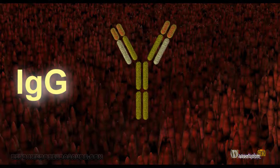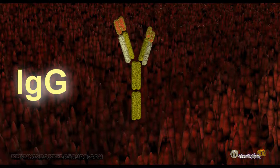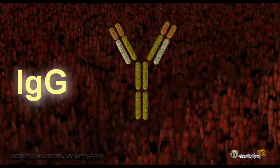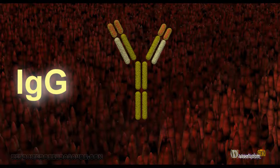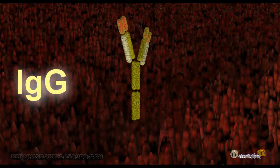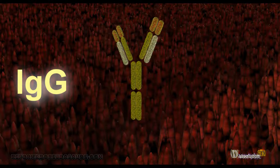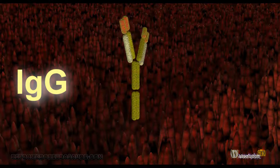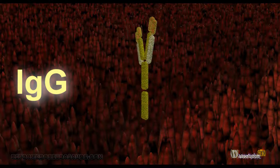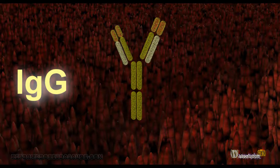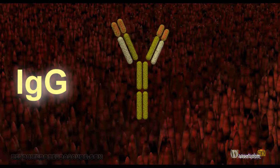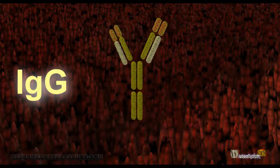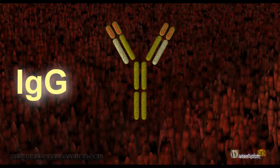IgG binds and neutralizes toxins. IgG also plays an important role in antibody-dependent cell-mediated cytotoxicity and intracellular antibody-mediated proteolysis, in which it binds to the receptor with the highest affinity for IgG in humans to target labeled variants to the proteasome. IgG cytotoxicity is also associated with type 2 and type 3 hypersensitivity reactions.